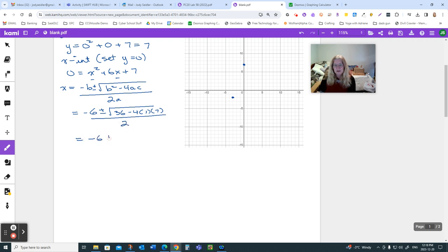So negative 6 plus or minus the square root of 8. And I'm going to go a little bit further than we might, only because I have to put this on a graph. So 2 goes into all three of these terms. Remember, that's a term, that's a term, and that's a term. And they are all divisible by 2. So I end up with negative 3 plus or minus root 2 as my x intercepts.